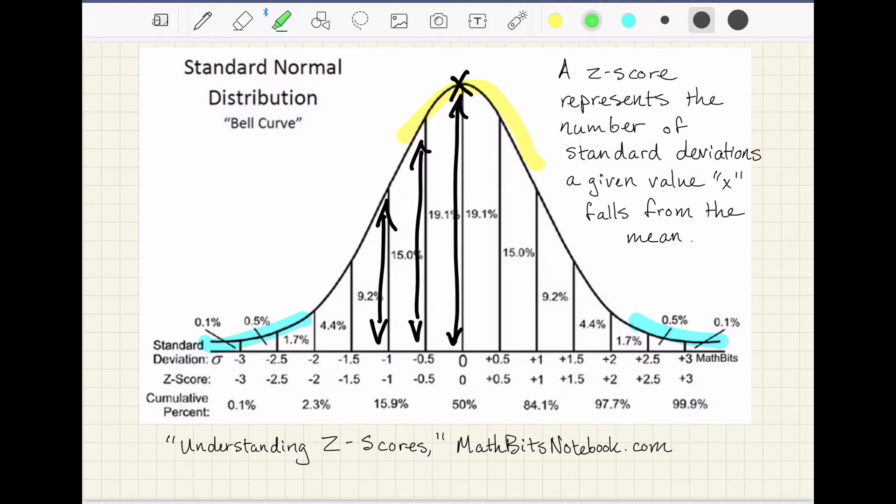In a normal distribution, approximately 68% of the measurements fall within one standard deviation of the mean. So if you look at minus one standard deviation to plus one standard deviation, and you add up 15% plus 19.1% plus 19.1% plus 15%, you get 68.2%. On the bottom line of this figure, the cumulative percent is shown, meaning that as we move to the right, we cover more and more of this curve, adding up the percent of measurements that would be included as we go.